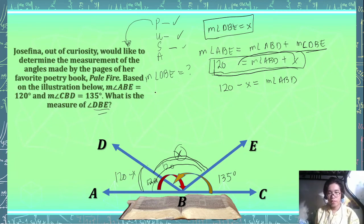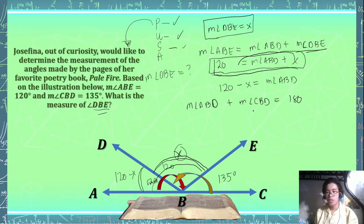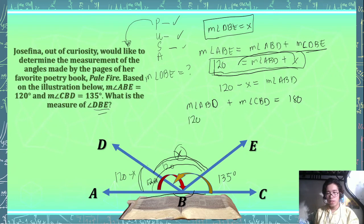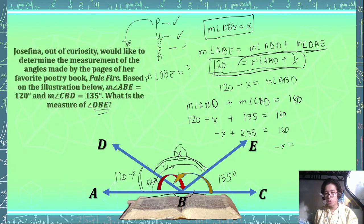We can add the measurement of angle ABD plus the measurement of angle CBD, which gives us 180 degrees, because this is a straight line — using the linear pair postulate. So: (120 minus X) plus 135 equals 180 degrees. Adding 120 and 135 gives us negative X plus 255 equals 180. Therefore, negative X equals 180 minus 255, which is negative 75.